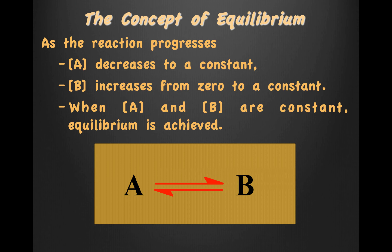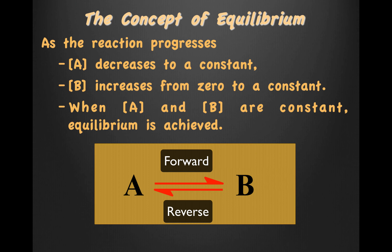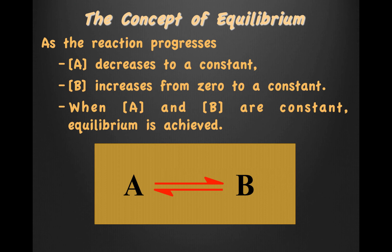Let's take a look at this example. A going to B in the forward direction, then B going to A in the reverse direction. As the reaction progresses, the concentration of A decreases to a constant — assuming you begin with A. Now let's assume that in your reaction vessel, you had no B to begin with. Over time, the concentration of B is going to increase from zero to a constant. When the concentration of A and the concentration of B are constant, equilibrium is achieved. The concentration of A and B do not have to be equal — they only have to be constant.